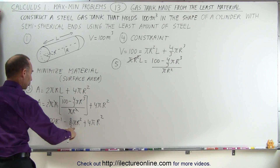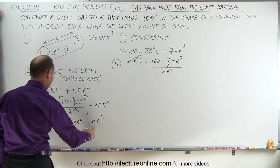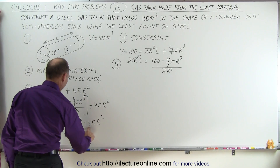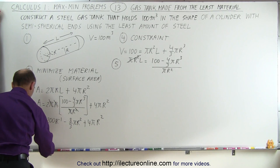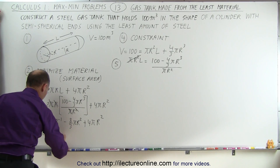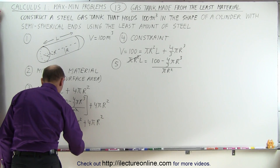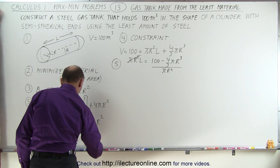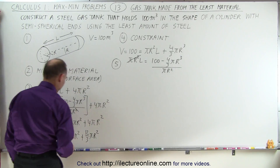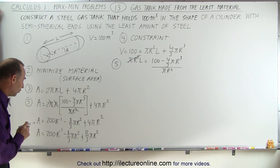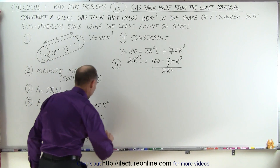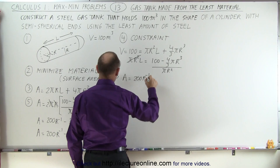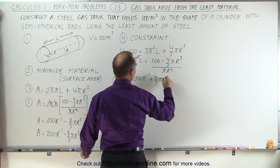We have a πr² term here and a πr² term there — let's combine them. 4π is (12/3)π, and we subtract (8/3)π, giving (4/3)πr². So the simplified equation is: A equals 200r⁻¹ plus (4/3)πr².